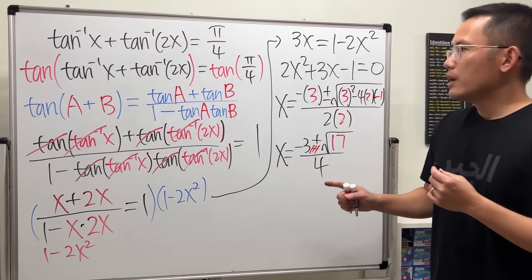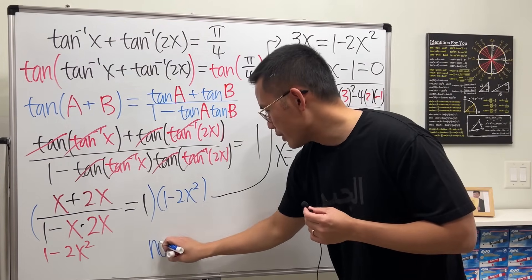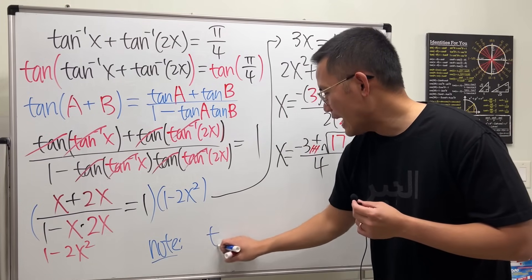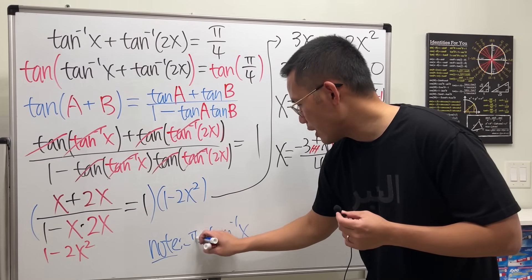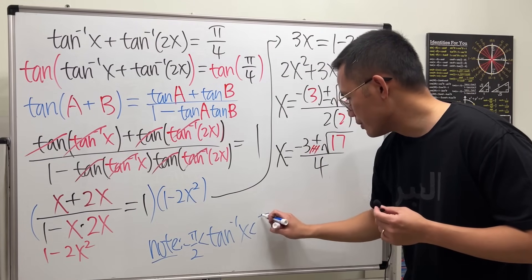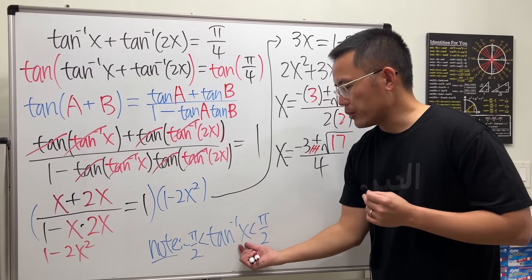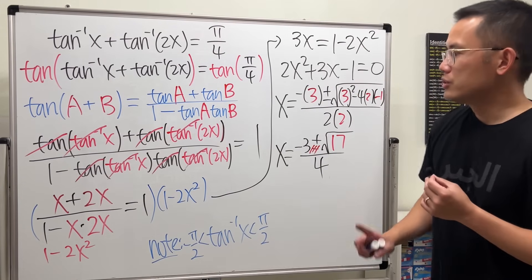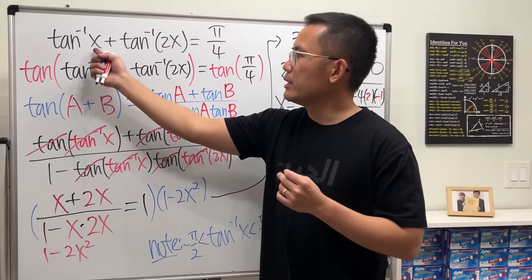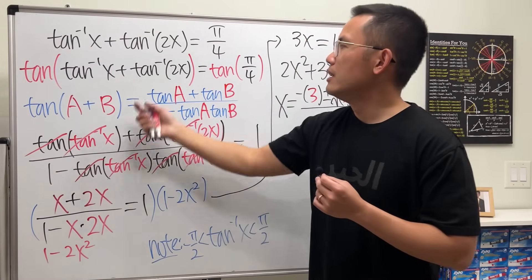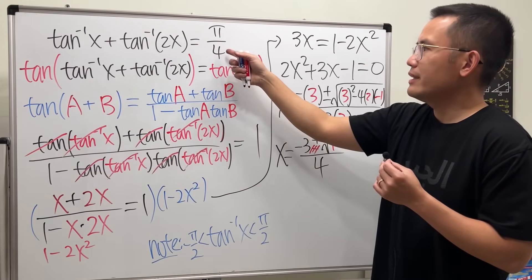So right here only one of them is going to work. Which one? I'll tell you, the positive version. So we are going to get rid of the negative right here, and this is the reason why. We will have to pay attention to the domain range for inverse tangent. And the most important thing right here is the following. Note that if you have the inverse tangent of x, the output of it is in between negative pi over 2 and pi over 2, not including the endpoints. And the truth is, if you have negative x value, you will get negative output.